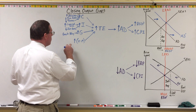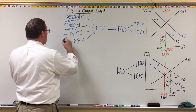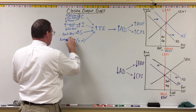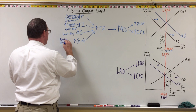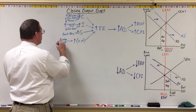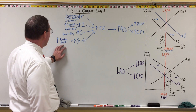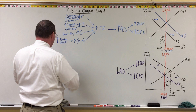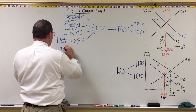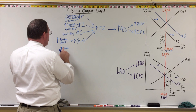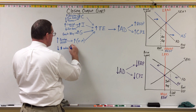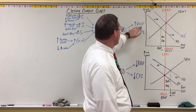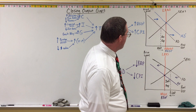Lastly, net exports. Foreign real GDP affects net exports: when foreign real GDP is higher — meaning other countries are in economic expansion — net exports will be higher for us. Also, the value of the U.S. dollar matters. When the U.S. dollar has a lower value against other currencies, people in other countries can afford to buy more of our stuff, so net exports goes up, total expenditure goes up, aggregate demand goes up, real GDP goes up, closing the recessionary gap and bringing us back into long-run equilibrium.